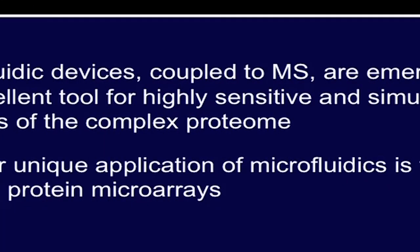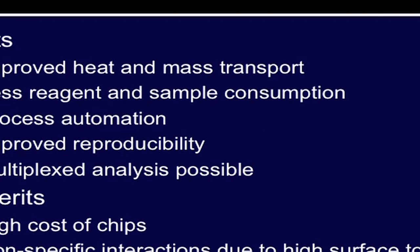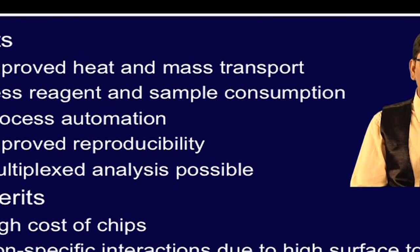With intense research and increasing interest in using microfluidic devices coupled with mass spectrometry, it can provide an excellent platform for highly sensitive and simultaneous analysis of complex proteomes. Another unique application in proteomics is using microfluidics to print microarrays. Printing DNA, RNA and proteins on the chip surface is always challenging, and microfluidic-based systems offer solutions to enhance spot-to-spot reproducibility and lower sample consumption during printing. Microfluidic platforms offer improved heat and mass transport, lower reagents and sample consumption, automated processes, higher reproducibility, and capability for multiplexing analysis.